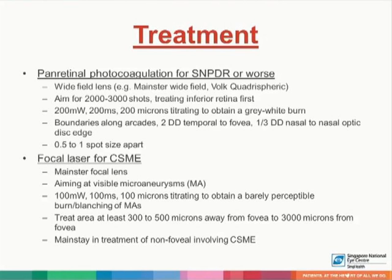For focal laser in CSME, we use Mainster focal lens, aiming at visible microaneurysms, with settings of 100 milliwatts, 100 milliseconds, 100 microns, titrating to obtain a barely perceptible burn or blanching of the microaneurysm. We treat an area at least 300 to 500 microns away from the fovea, up to 3,000 microns from the fovea. This is the mainstay in the treatment of non-foveal-involving CSME.